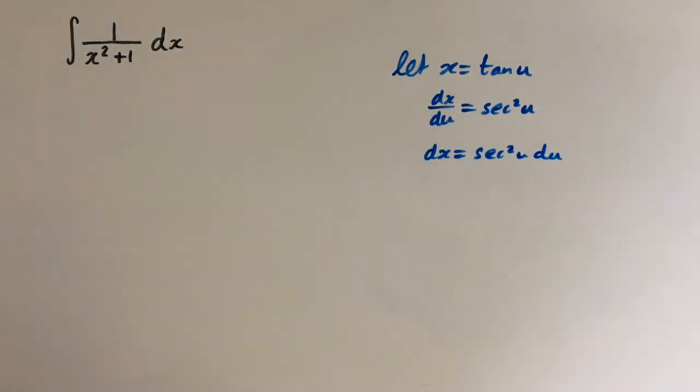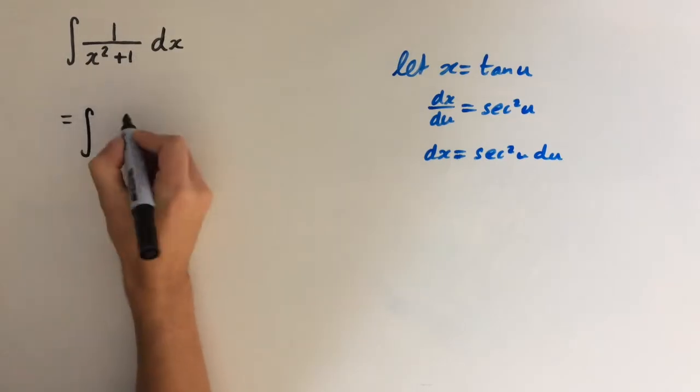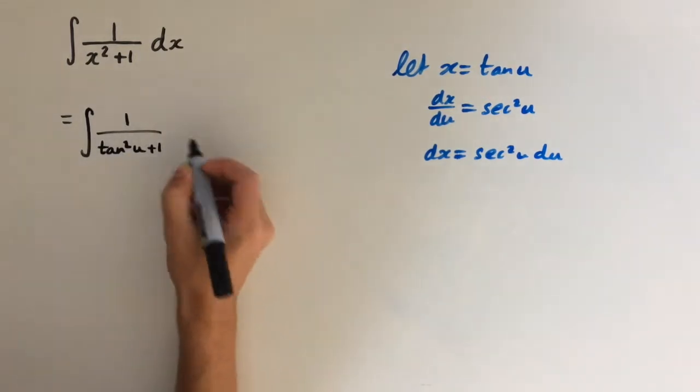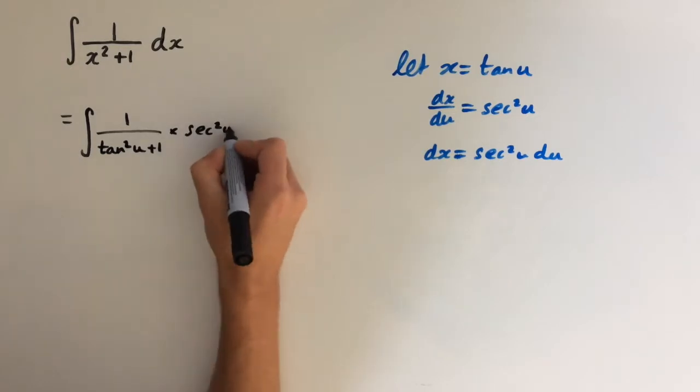And now we can substitute all the x's for u's. So this is going to give us integral of 1 over x equals tan of u, so 1 over tan squared of u plus 1 times all of this, so sec squared of u du.